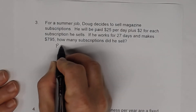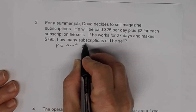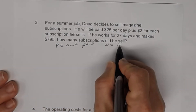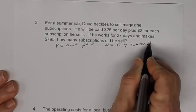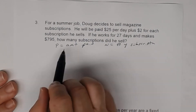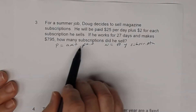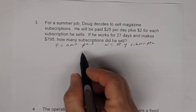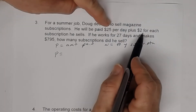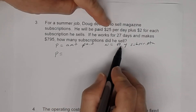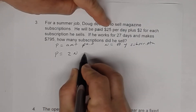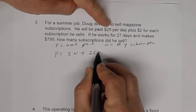Let's go ahead and let P be the amount paid, and let N equal the number of subscriptions — how many subscriptions he sells. So we'll let N equal the number of subscriptions and P is how much he's paid. The relationship between P and N: he's paid $25 a day plus $2 for each subscription. The number of subscriptions — for each of those he's being paid $2 — so it'll be 2 times N plus $25 for each day.